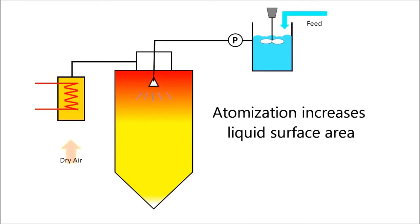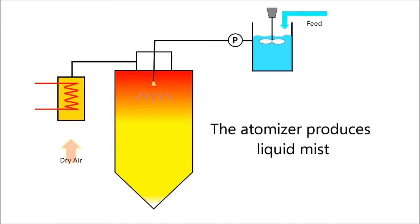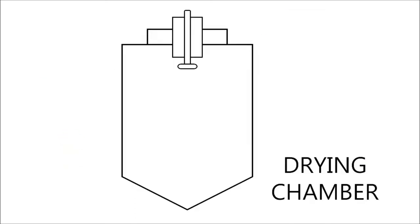Atomization is important here because it creates greater liquid surface area for maximum contact between air and liquid droplets. The atomizer will produce a liquid mist where it leaves the atomizer and be distributed over the drying chamber.